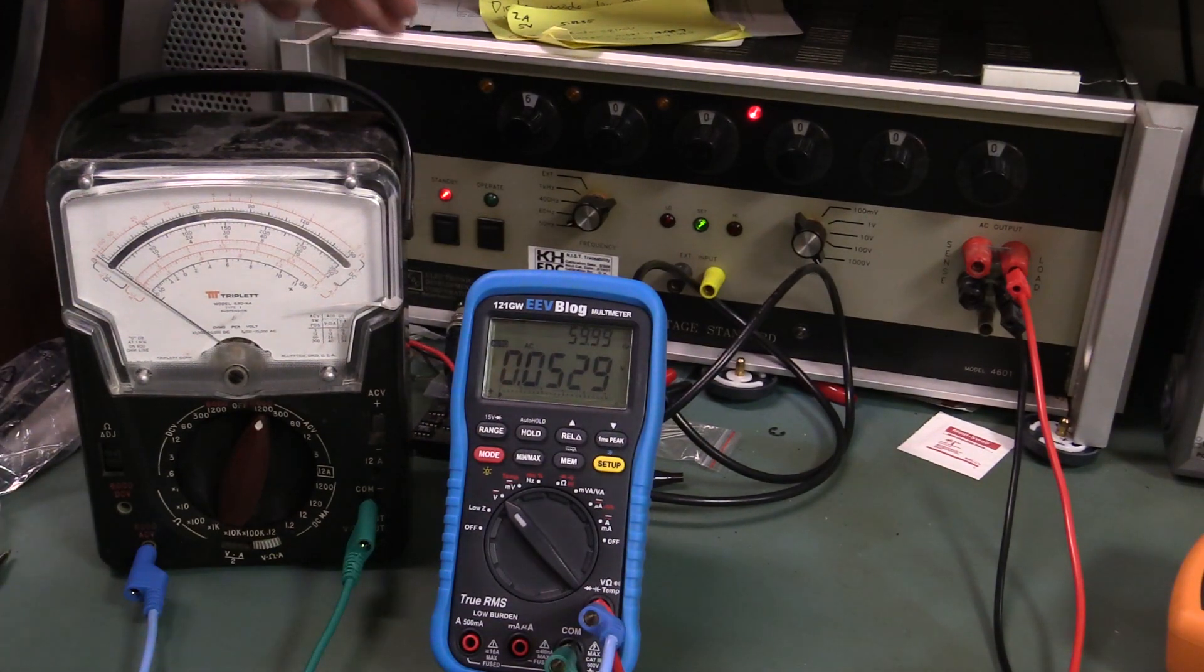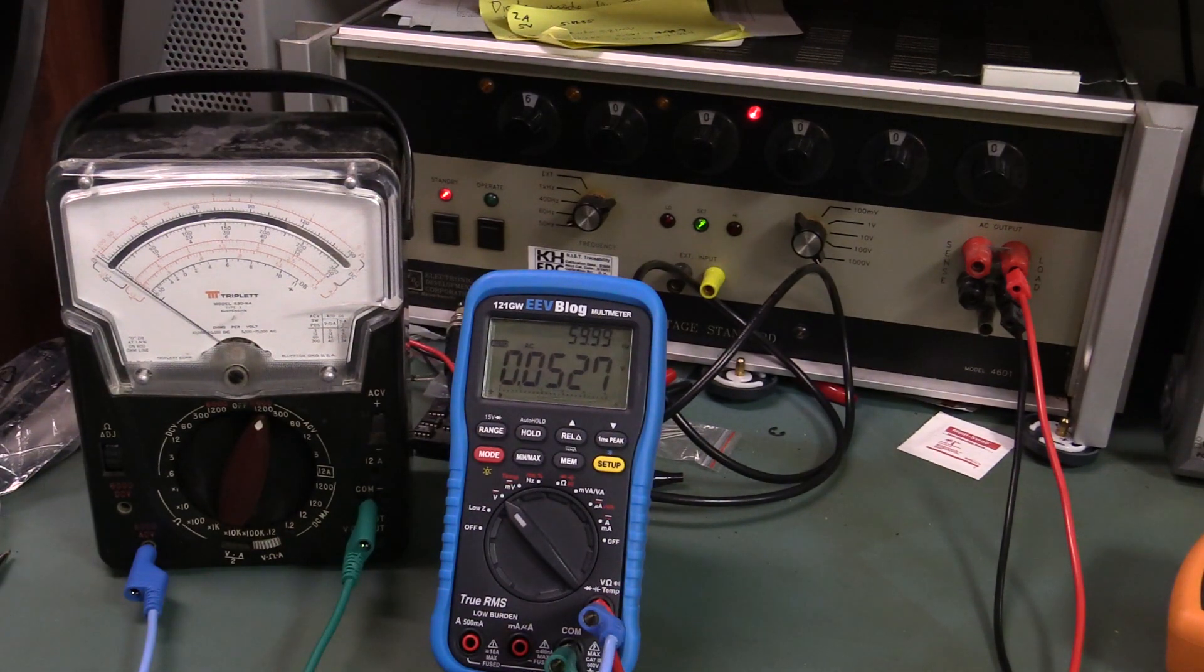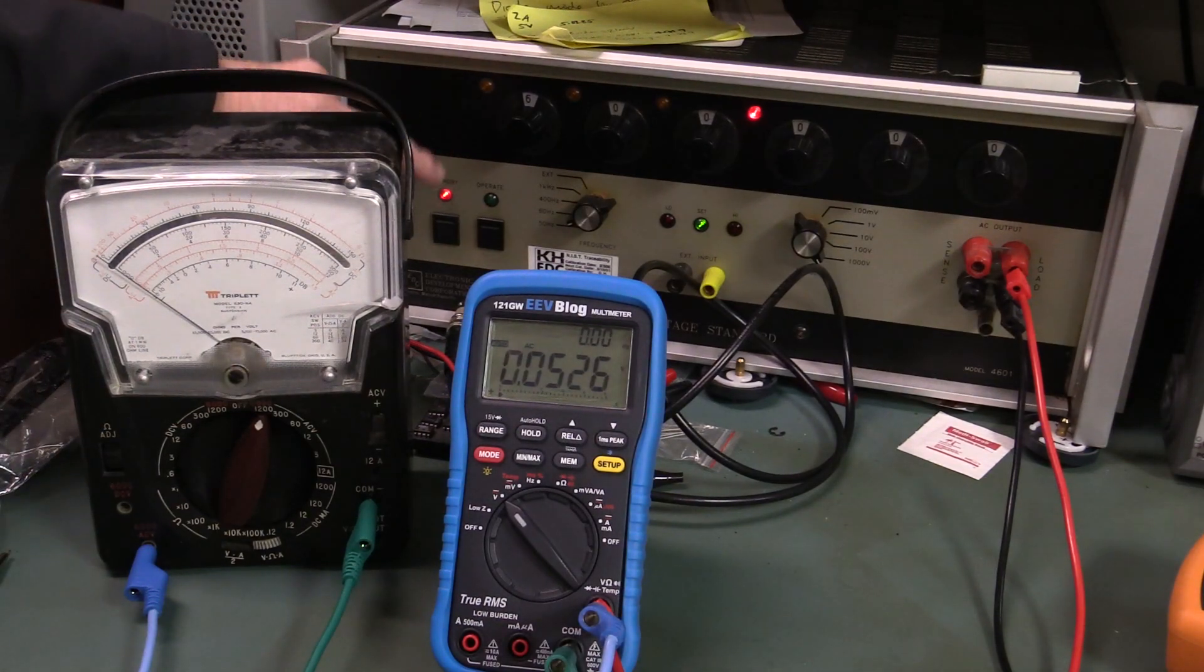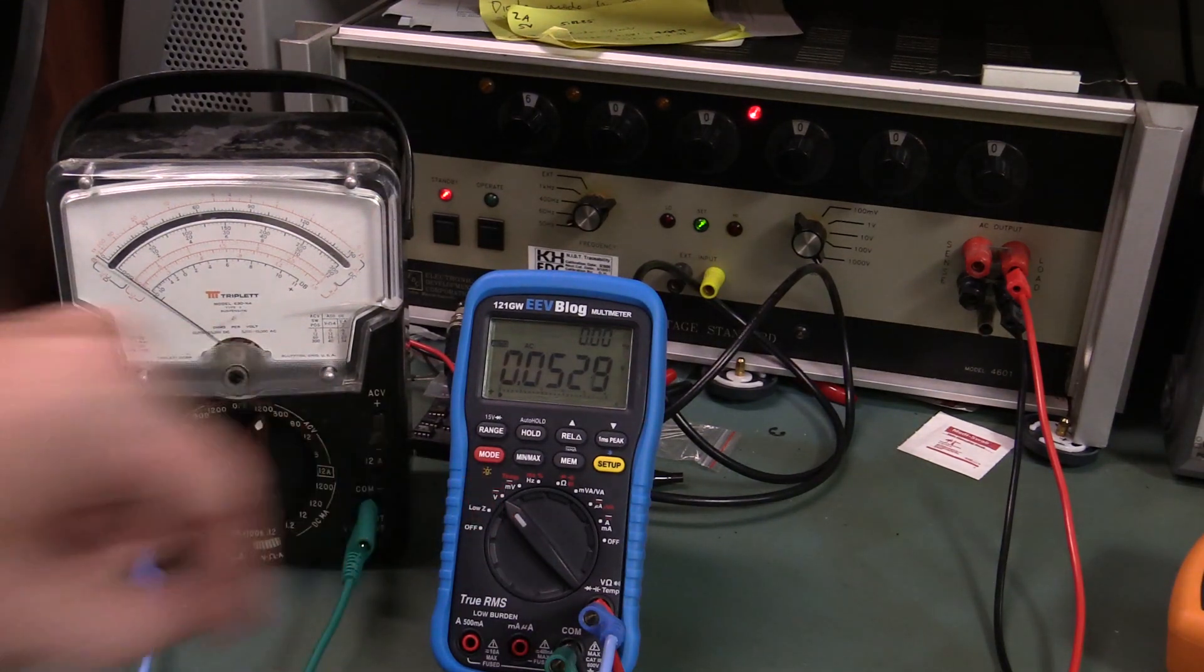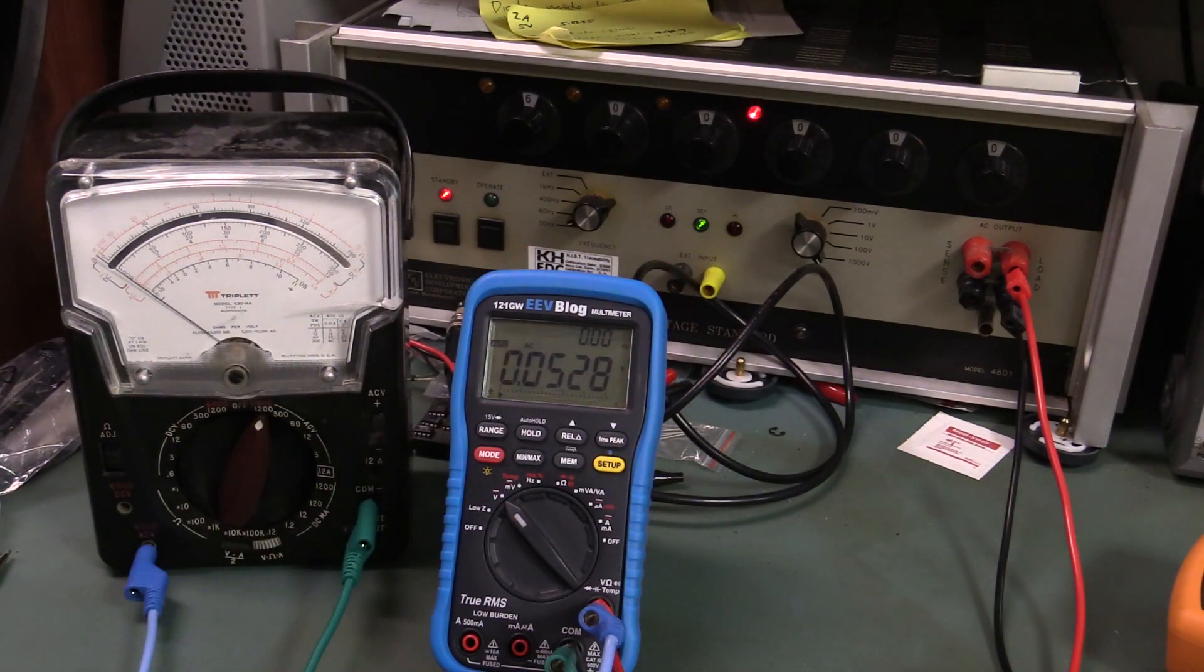This time I've got my high-voltage AC reference standard here, which can actually deliver about I think it's about 30 watts or something. It's actually quite a substantial supply. Anyway, I've got it set to 60 hertz, 600 volts AC, the switch in the volts position here.